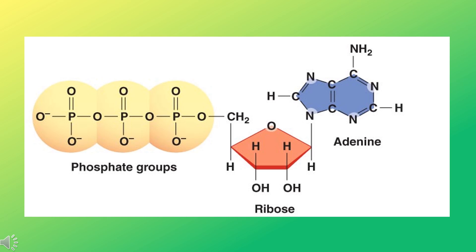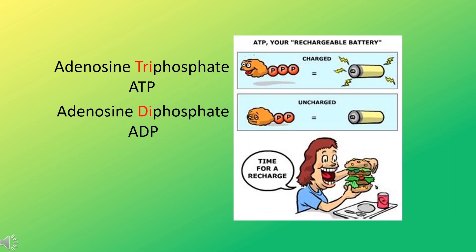Animals, and ourselves, synthesize ATP through a series of complicated steps: glycolysis, the citric acid cycle, and the electron transport chain, where the majority of ATP is produced.